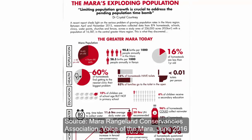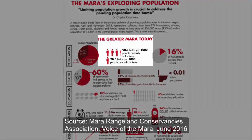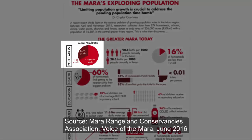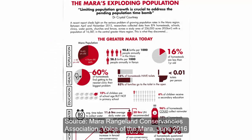In the Greater Mara area, over 90 births per 1,000 people occur annually, which is almost three times as much as the amount for Kenya. Moreover, 66% of the population is younger than 16 years. Where Kenya has a population doubling time of 27 years, this could be somewhere between 10 and 15 years in the Mara.